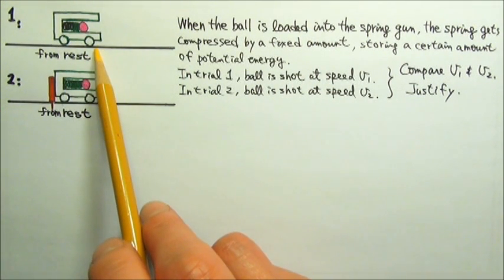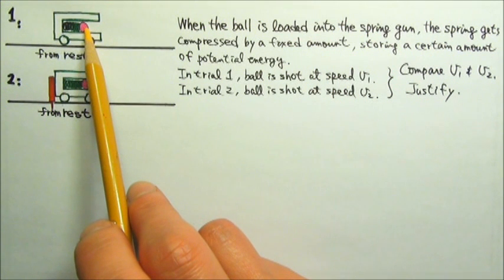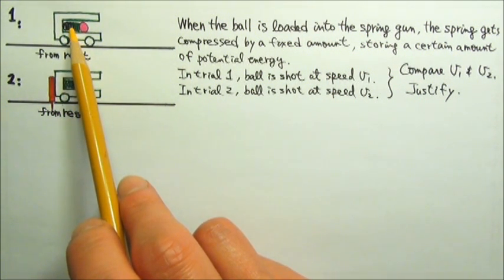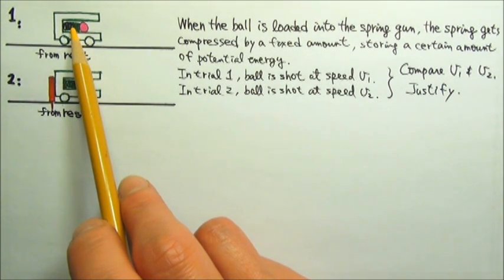Here we have a spring gun on wheels. Whenever we load this ball into the spring gun, the spring gets compressed by a fixed amount, storing a certain amount of elastic potential energy.